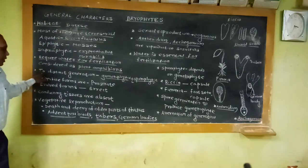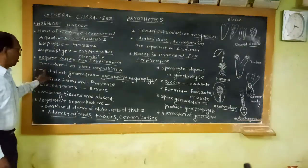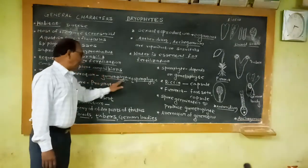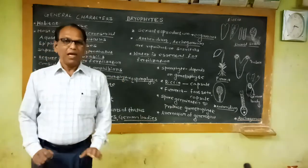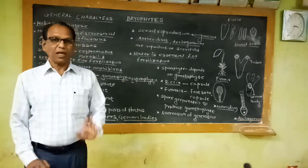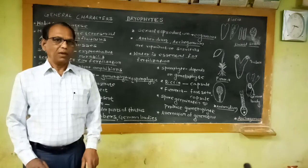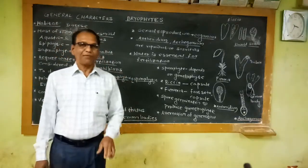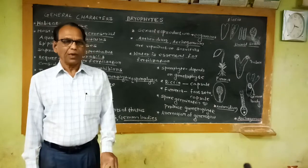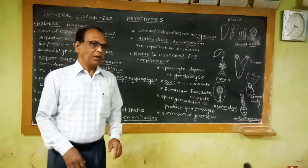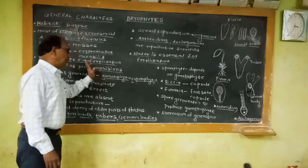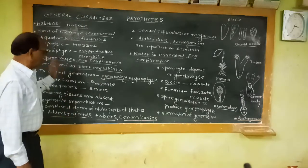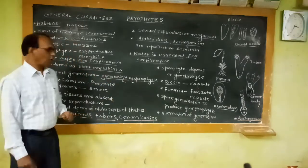Each and every bryophyte shows two distinct generations in its life cycle: gametophytic generation and sporophytic generation. The main plant body of all bryophytes is the gametophyte — it is independent and long-lived. The sporophyte is the second phase in the life cycle; it depends on the gametophyte and is short-lived. That means in the single life cycle, each and every bryophyte shows alternation of generations — the gametophytic phase alternates with the sporophytic phase.